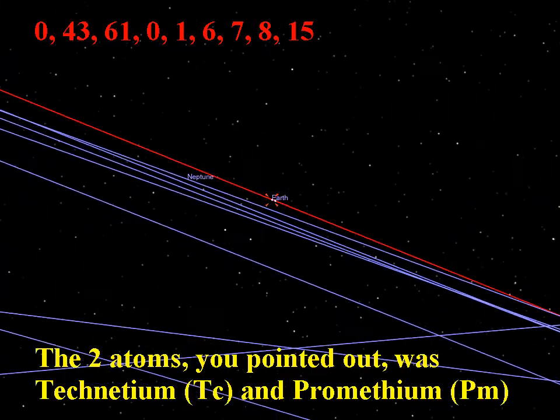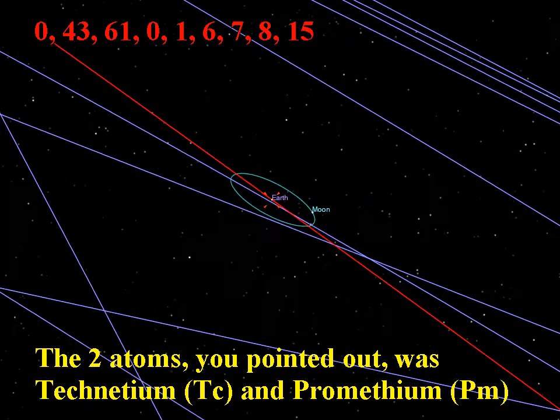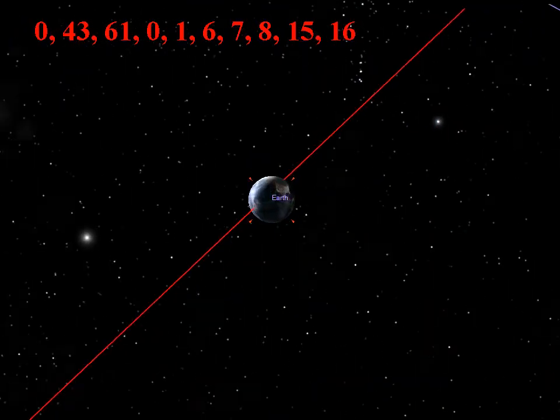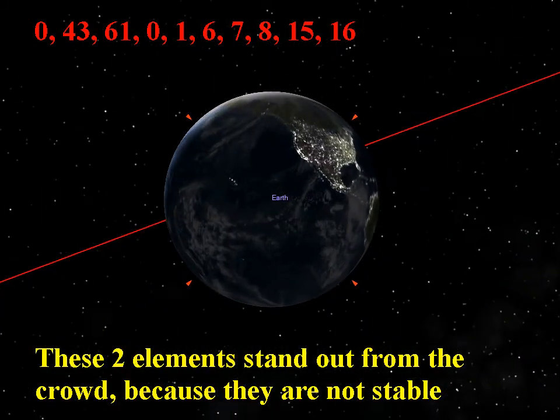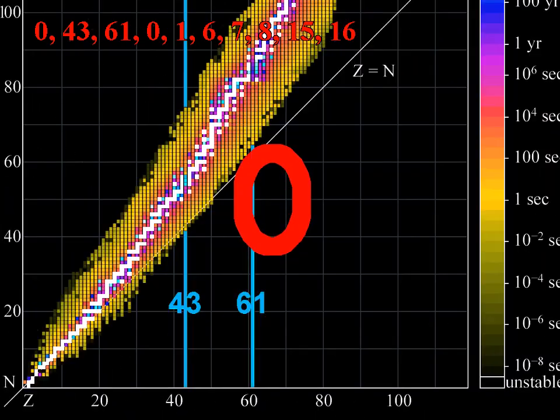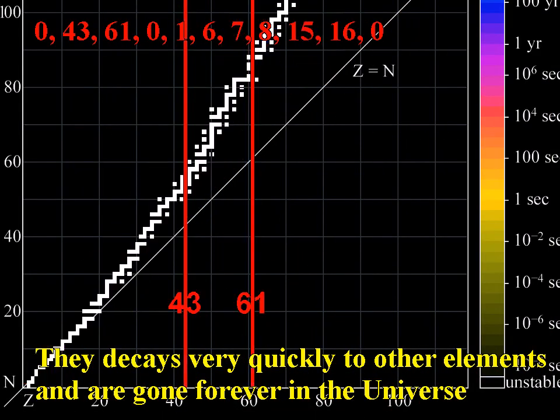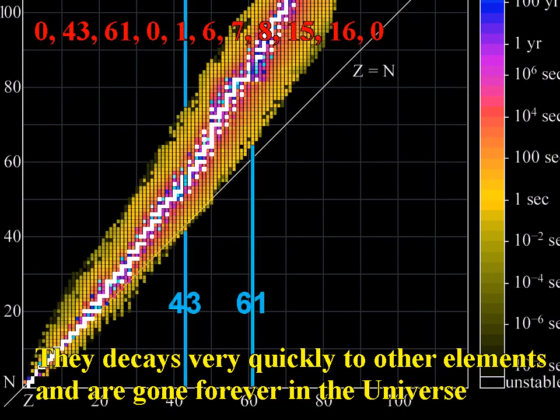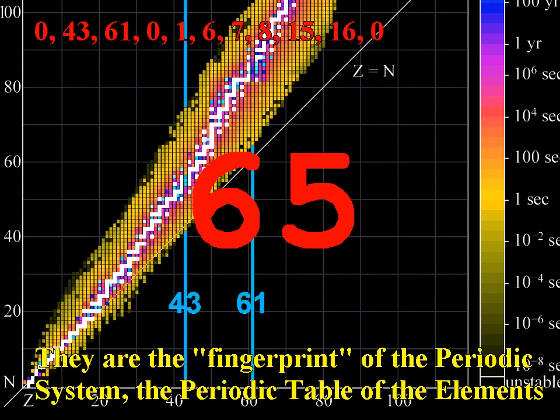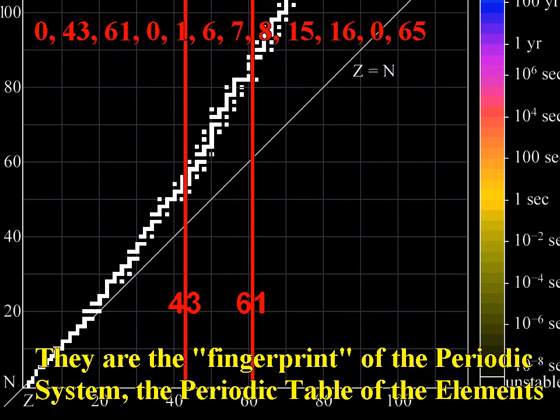The two atoms you pointed out was technetium and promethium, with the atomic number 43 and 61. These two elements stand out from the crowd because they are not stable. They decay very quickly to other elements and are gone forever in the universe. They are the fingerprint of the periodic system, the periodic table of the elements.